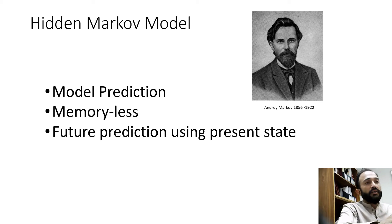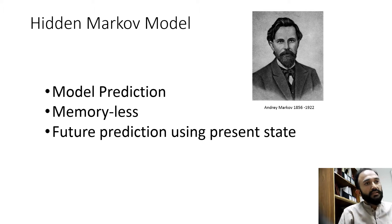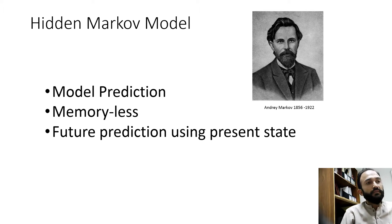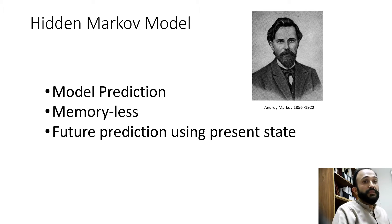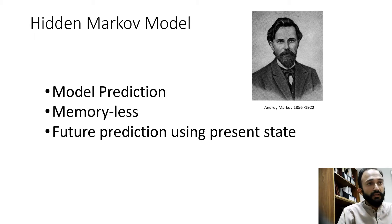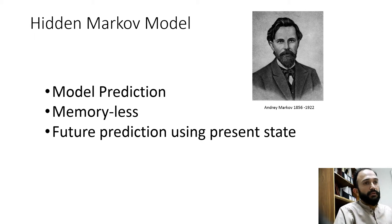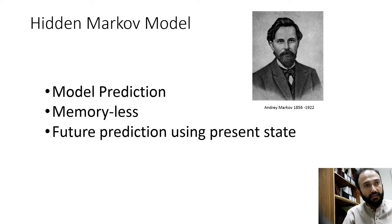The main feature of the Markov model is future prediction using the present state. Based on the information from the current state, it predicts what will happen next — how the model will behave in the future.